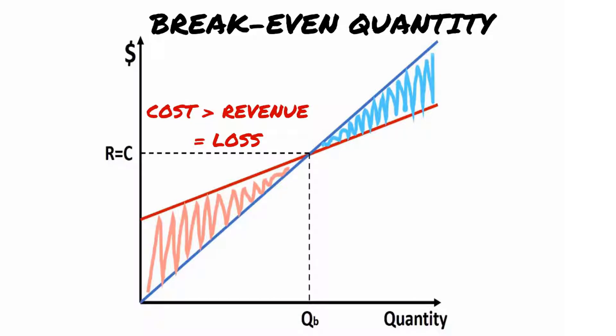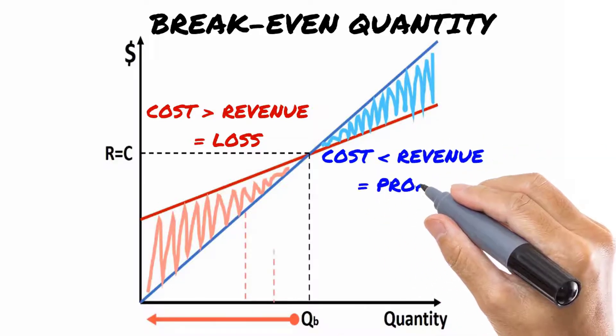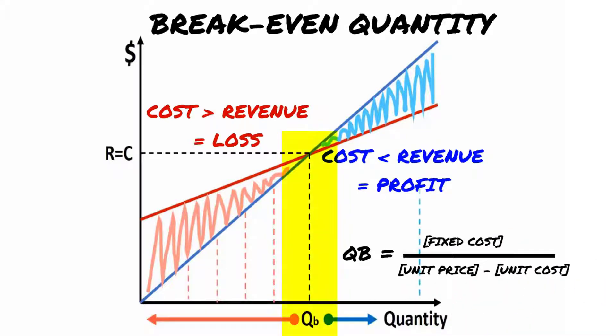On the other hand, when the blue line revenue is above the red line total cost, the company has profit. The quantity at the intersection between the two lines is called break-even quantity.